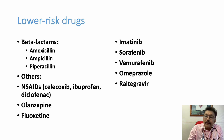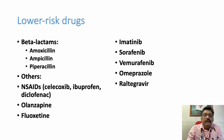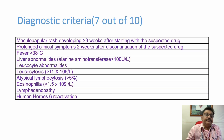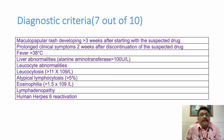Lower-risk drugs include penicillin, antacids, olanzapine, fluoxetine, some anti-cancer drugs, omeprazole, and antiviral drugs like raltegravir — these can rarely produce DRESS syndrome.